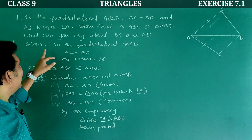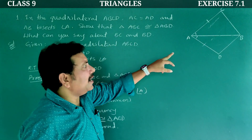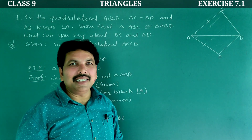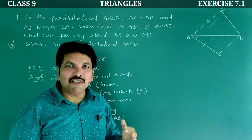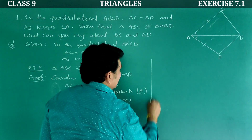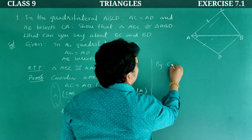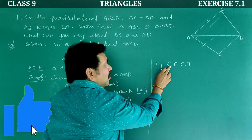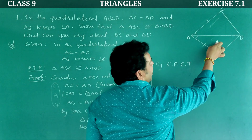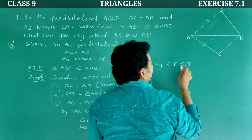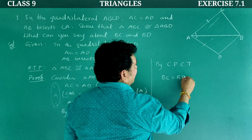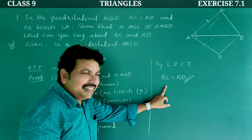What can you say about BC and BD? By CPCT — corresponding parts of congruent triangles — BC is equal to BD. These two congruent triangles have equal corresponding parts; corresponding sides are equal. By CPCT, BC is equal to BD. Is it clear? Yes, note it all.